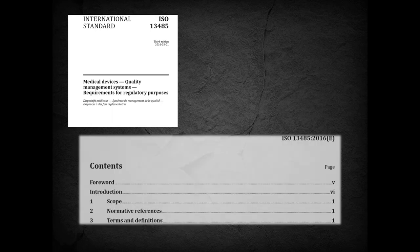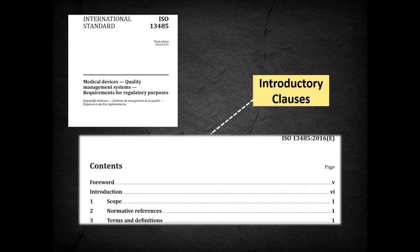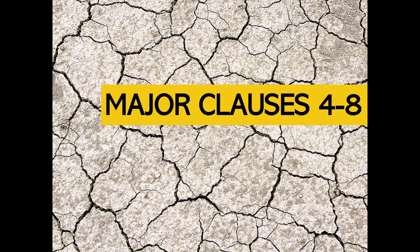What does the standard actually look like? ISO 13485's structure is split into eight sections. The first three are introductory, with the last five containing the requirements of the Quality Management System. Let's have a look at the major clauses four to eight.